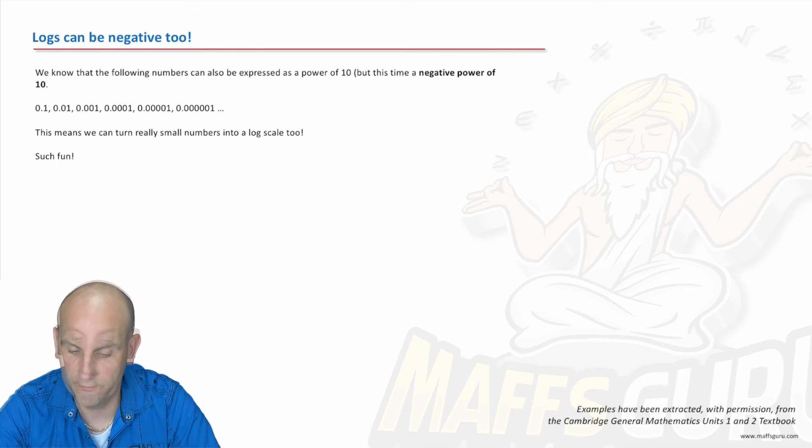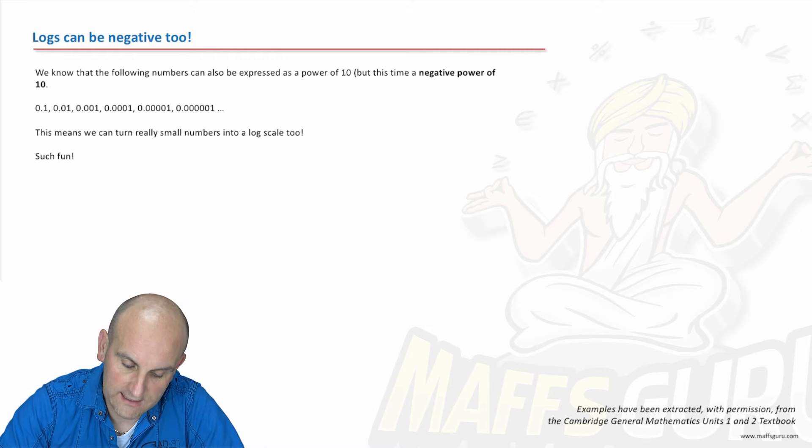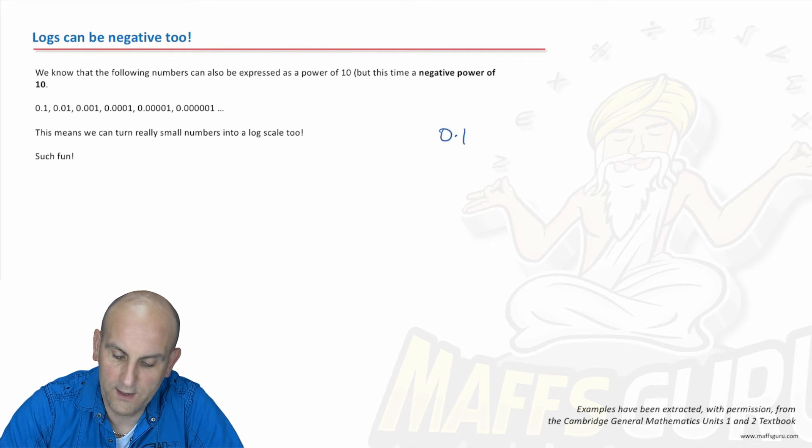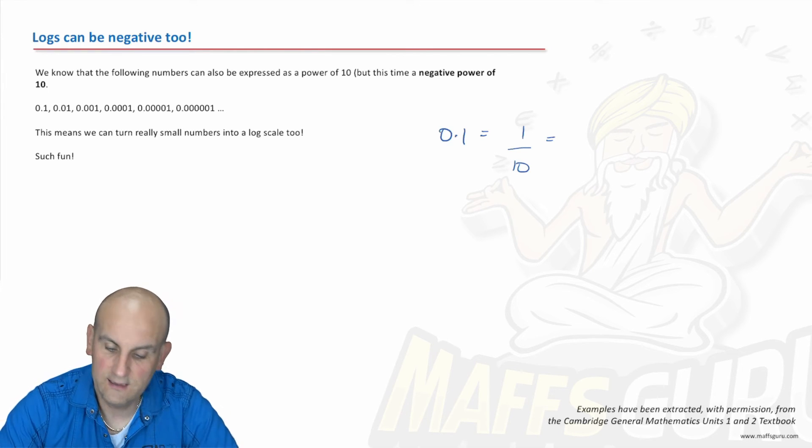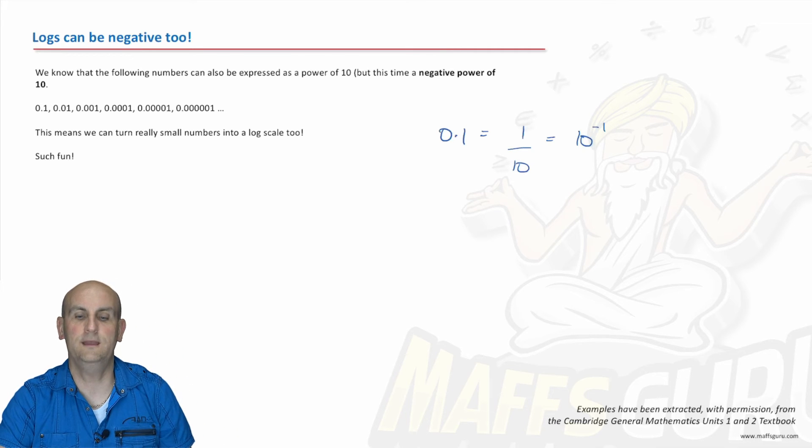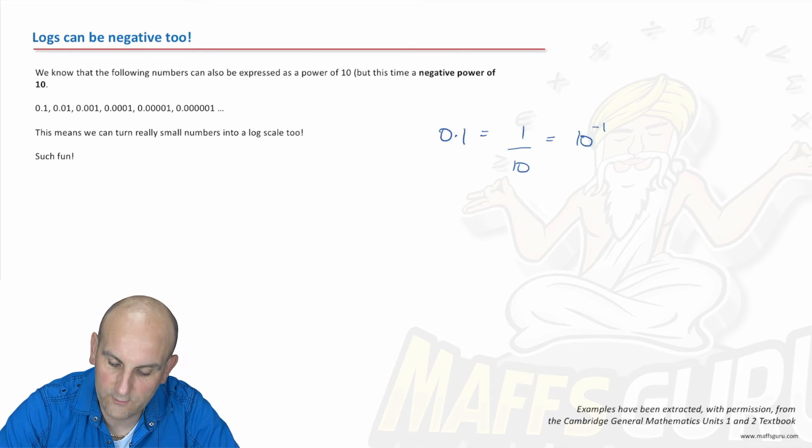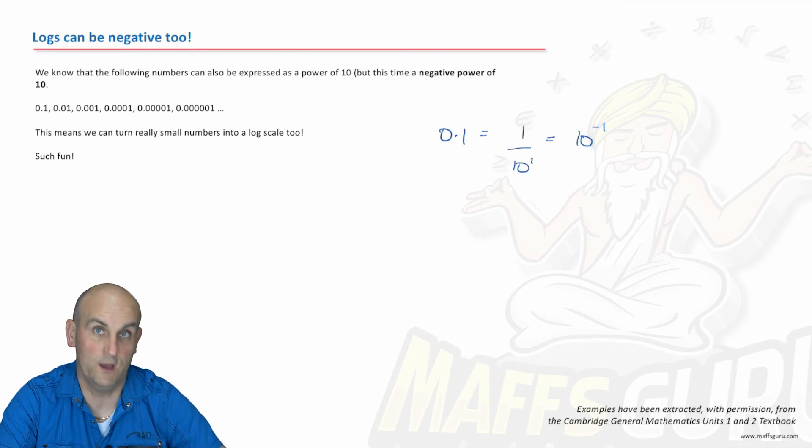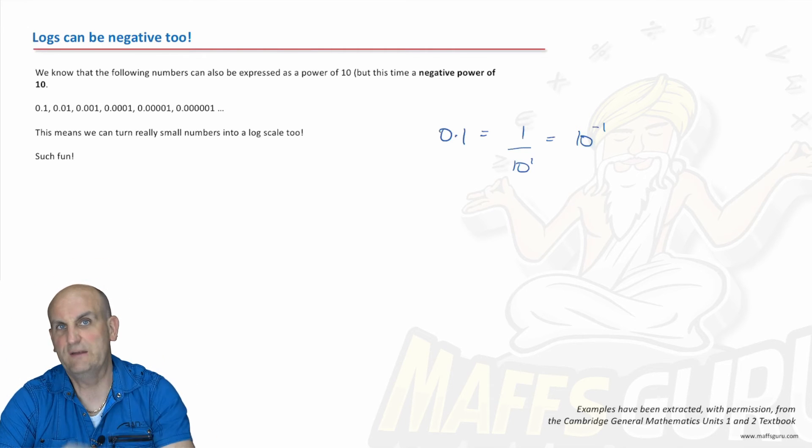What about small numbers? Well, actually, we can do the log of small numbers too. How? Well, we actually know that 0.1 is the same as 1 on 10, which, whether you know this or not, and again, it's not a huge deal if you don't, but it's good if you do, can actually be written as 10 to the power of minus 1. Now, Mrs. Hurst, who was the love of my life, basically told me that when you've got a little floaty number there, which is a 1, and you move it from the bottom of the fraction to the top, you just put a minus sign in front of it.